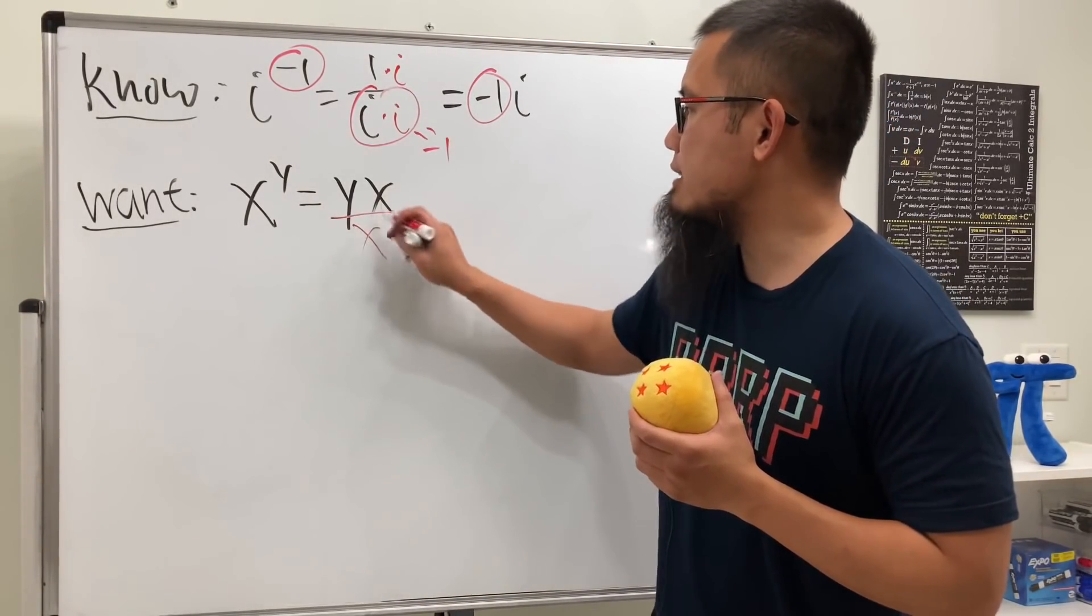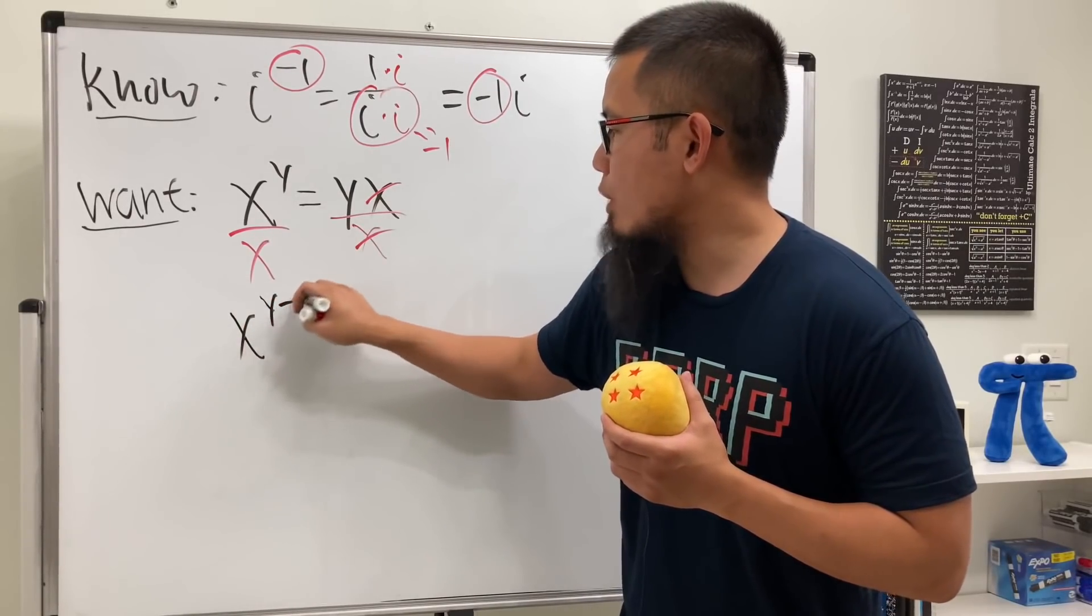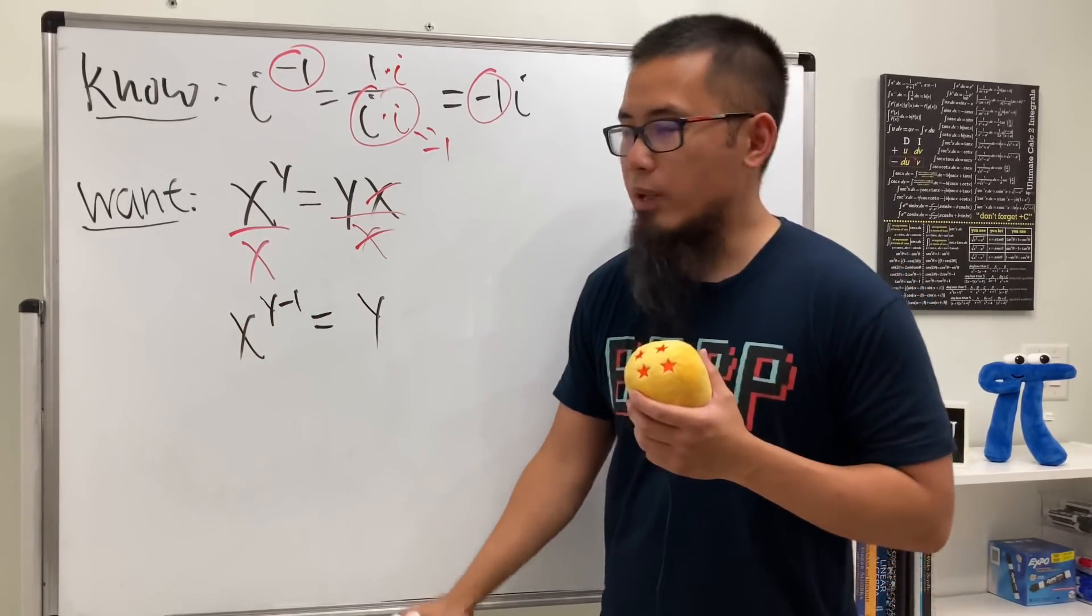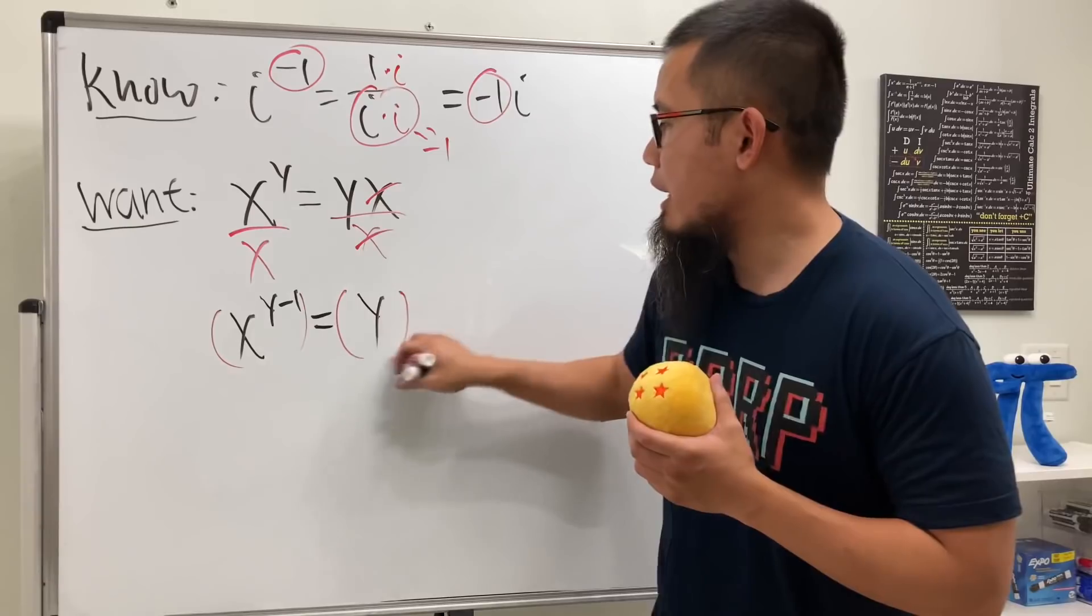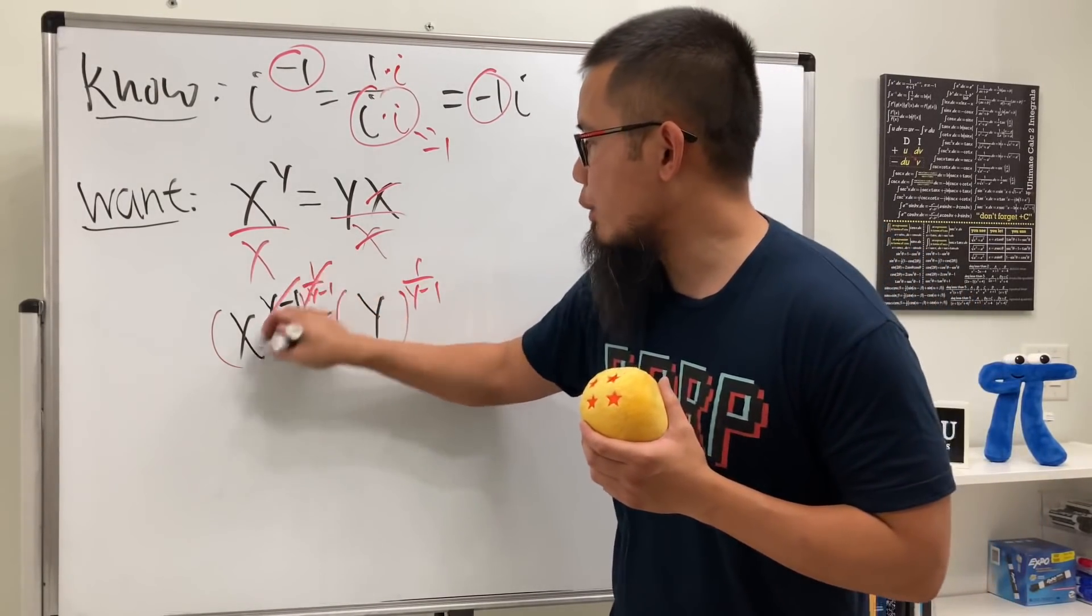To do so, we can first divide both sides by x, so we can cancel this out, and then this will get x to the y minus 1 power is equal to y. And then we can raise both sides to what power? Yes, 1 over y minus 1 power, like so, because this way, this and that will cancel.